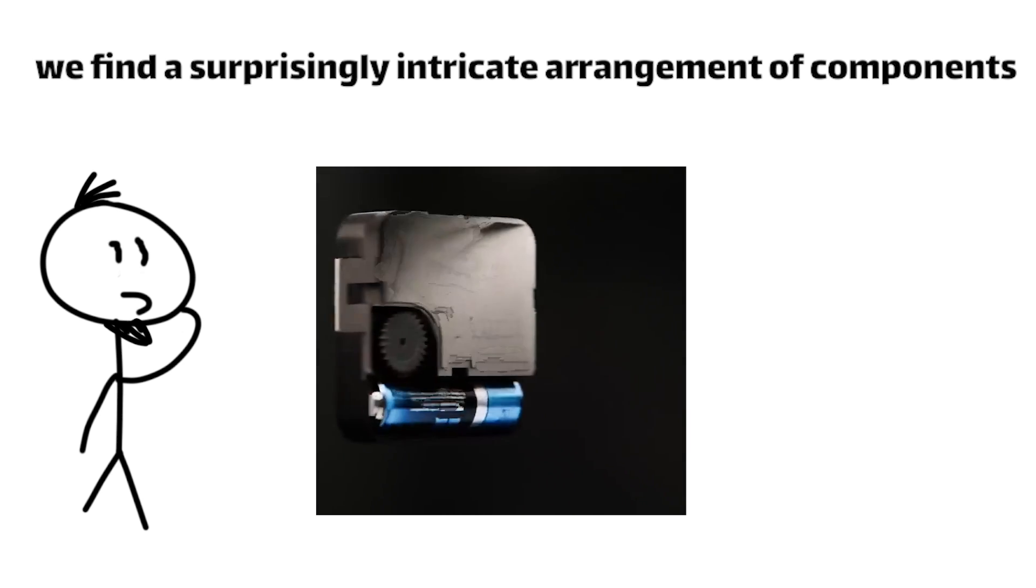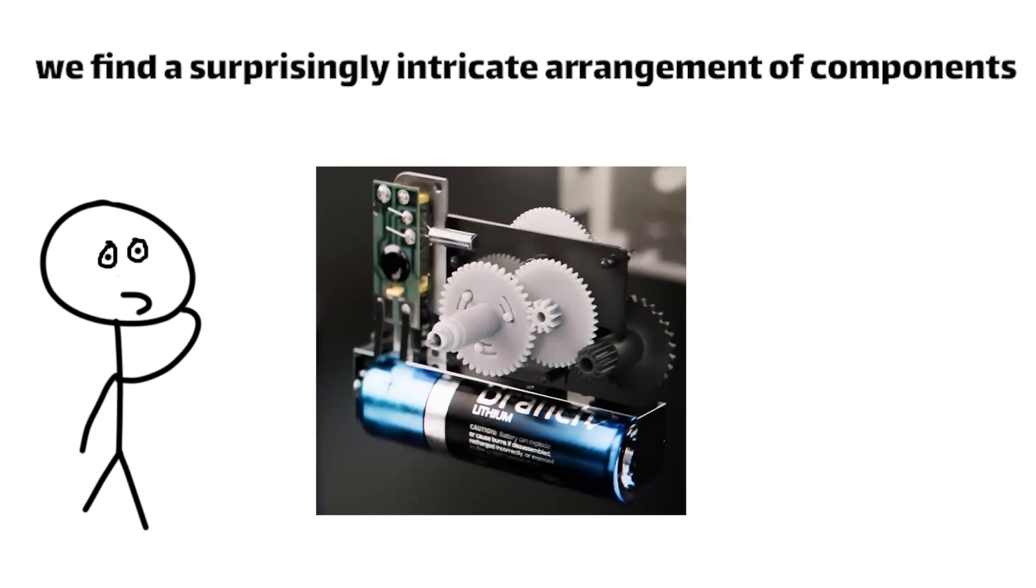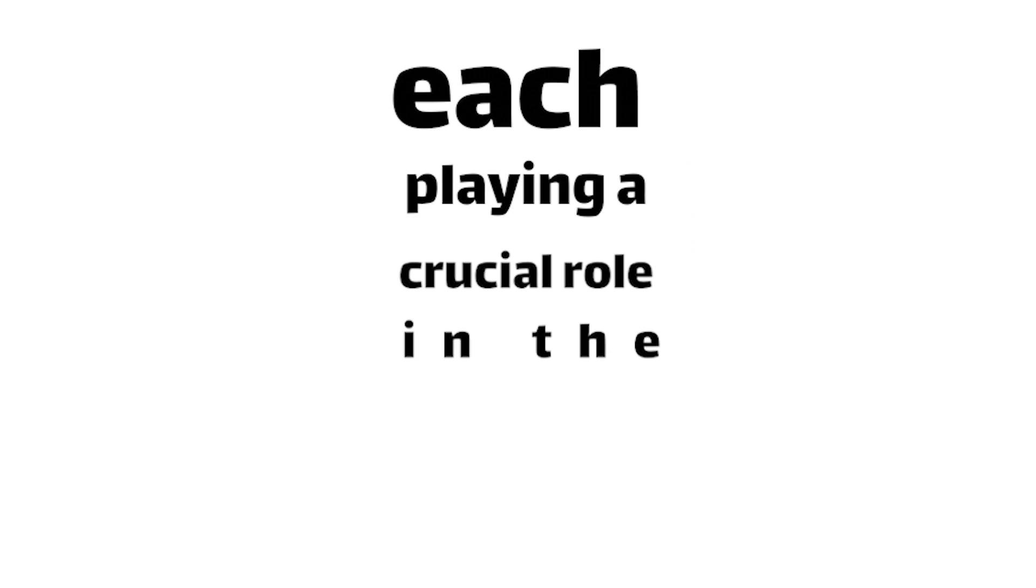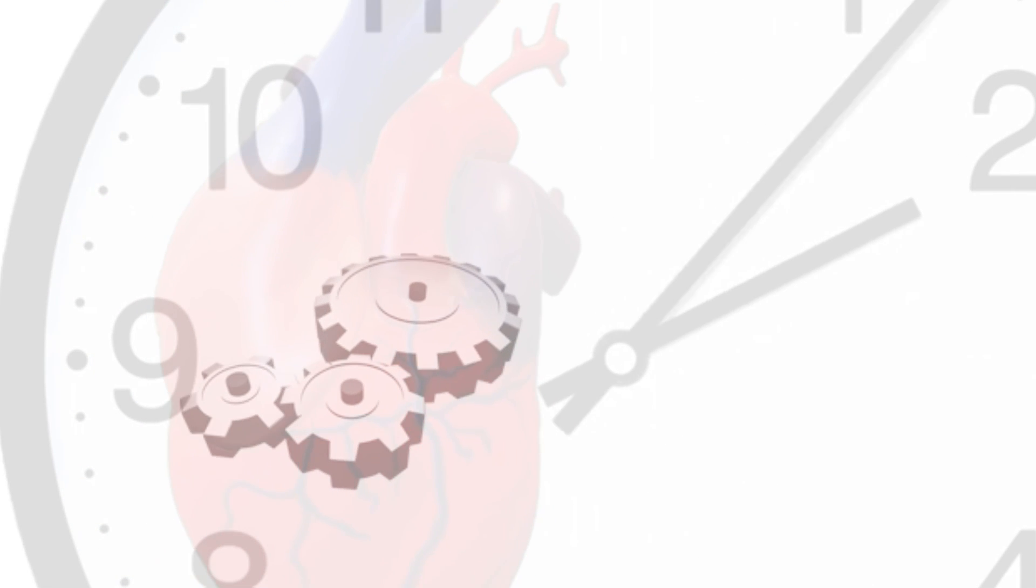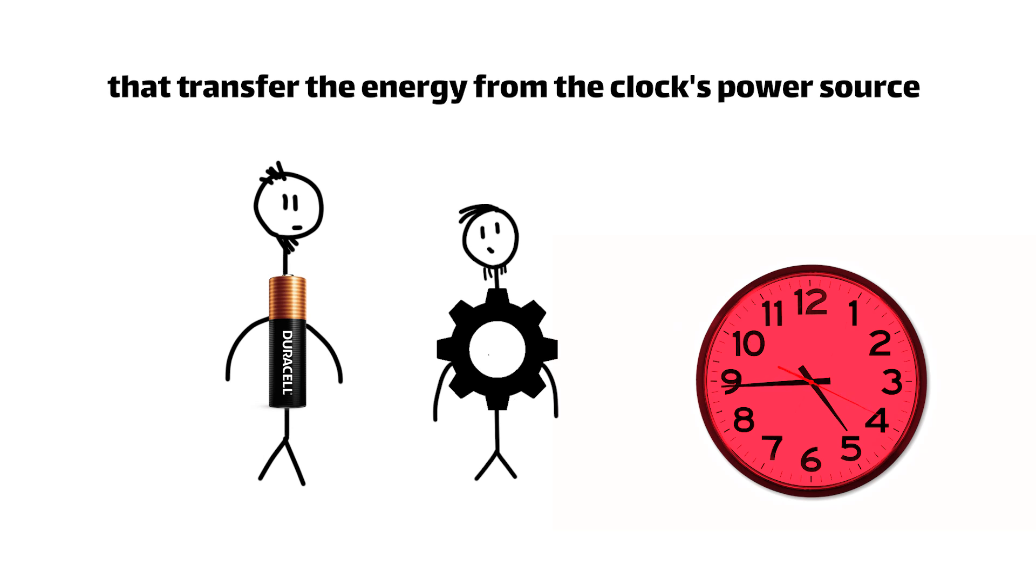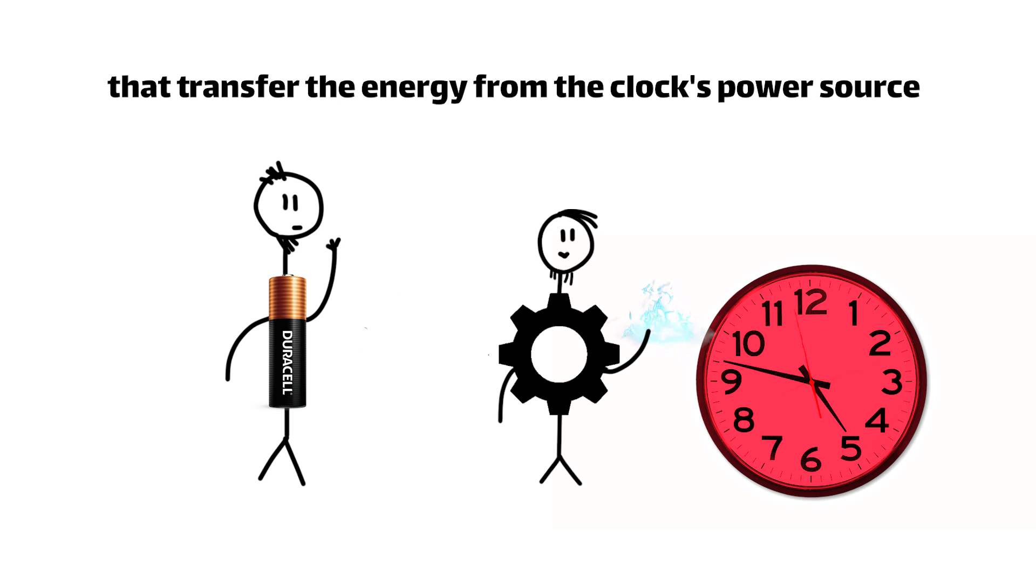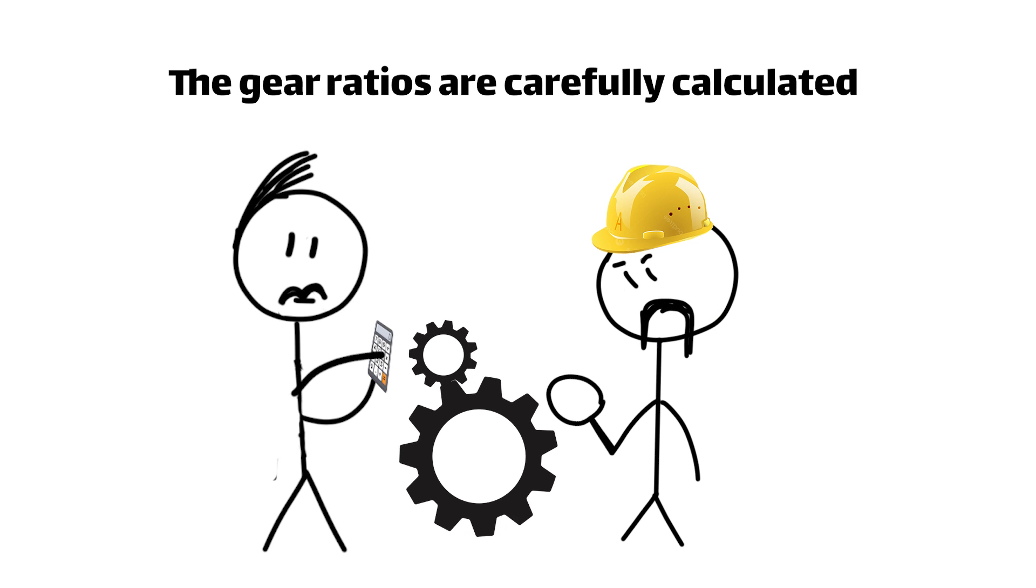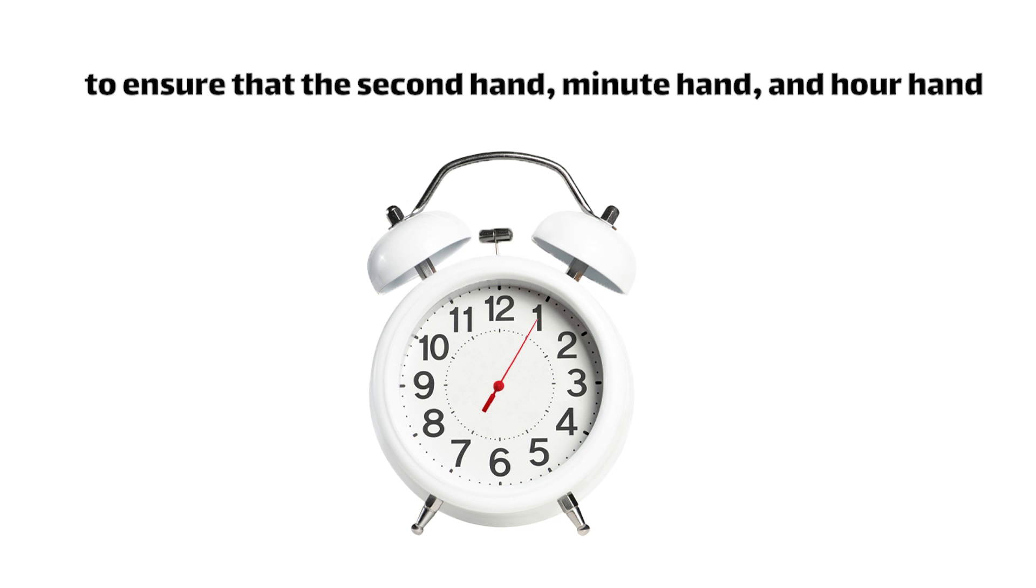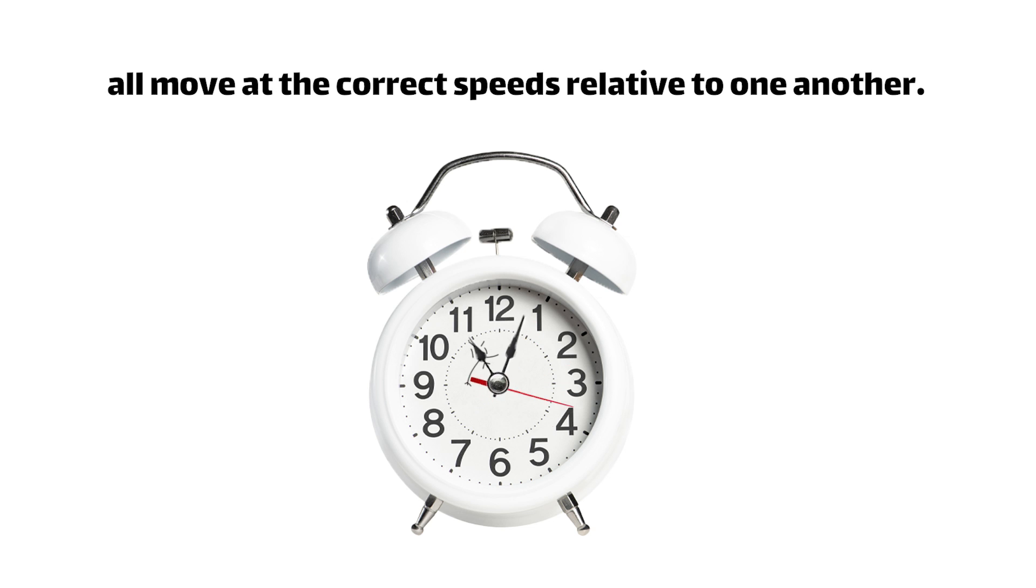Inside, we find a surprisingly intricate arrangement of components, each playing a crucial role in the clock's operation. At the heart of it all is the gear train, a series of interconnected gears that transfer the energy from the clock's power source to the hands on the face. The gear ratios are carefully calculated to ensure that the second hand, minute hand, and hour hand all move at the correct speed relative to one another.